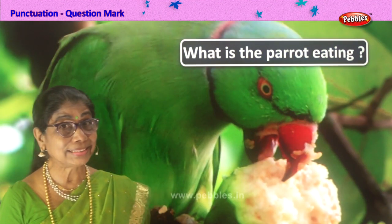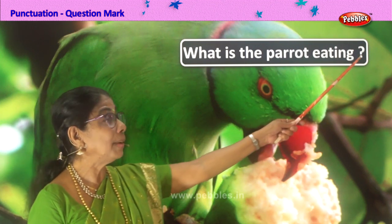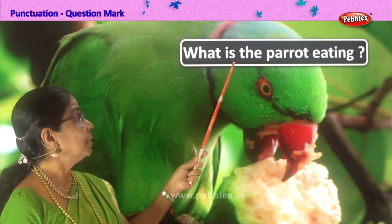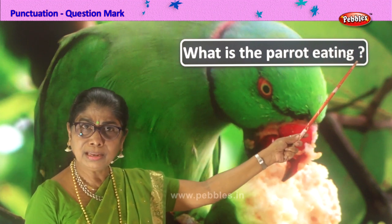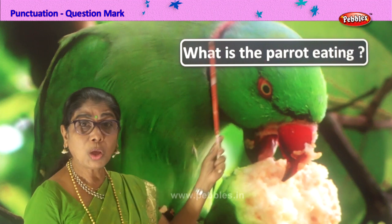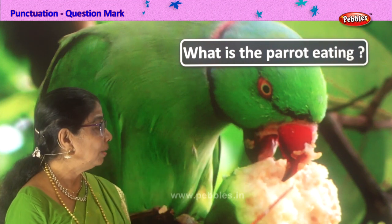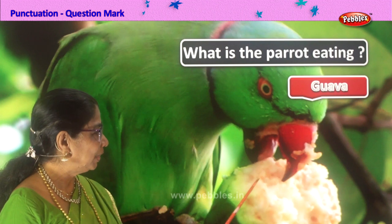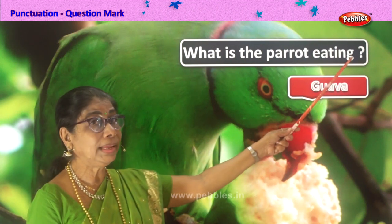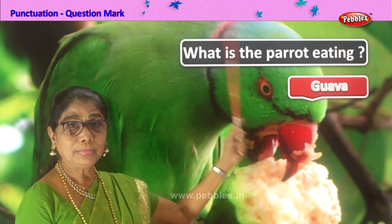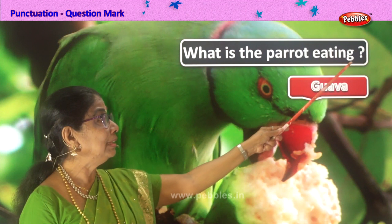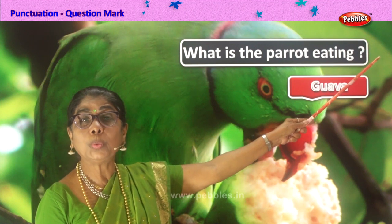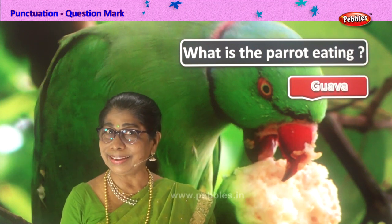Let's take another picture. Read the sentence, and if the sentence is asking a question, let's place a question mark at the end. What is the first word? 'W' begins with a capital letter. What is the parrot eating? It's asking a question, so we put a question mark. What is the parrot eating? Guava — lovely fresh guava, it's nicely pecking on it. Parrot is eating guava. This sentence begins with a capital letter, ends with a question mark because the sentence is asking a question. So we are putting the punctuation question mark at the end of the sentence. Good.